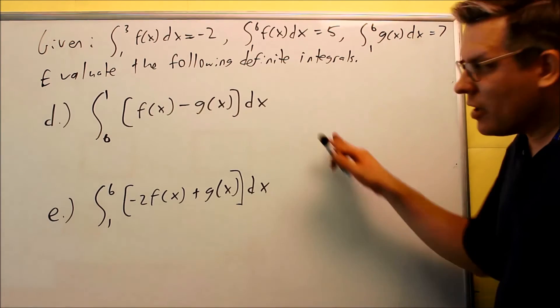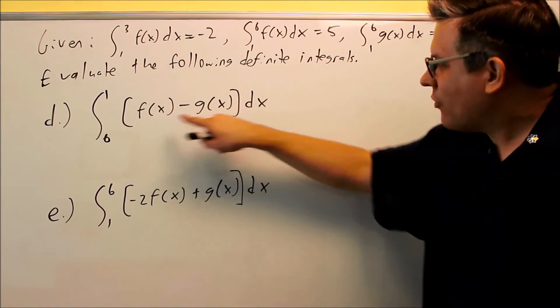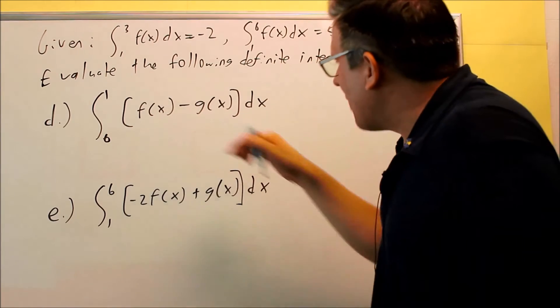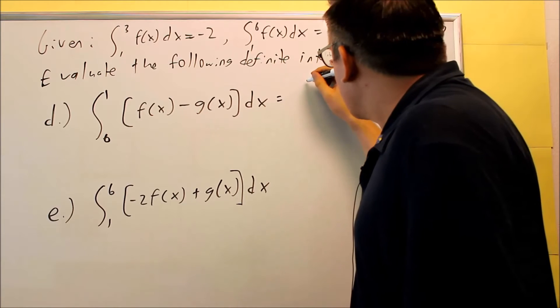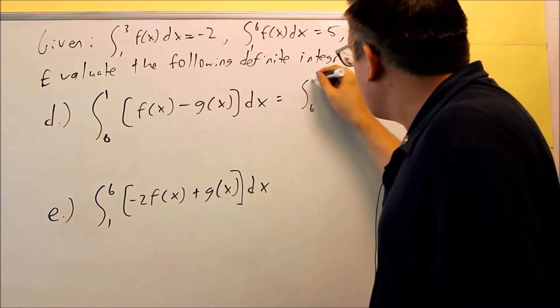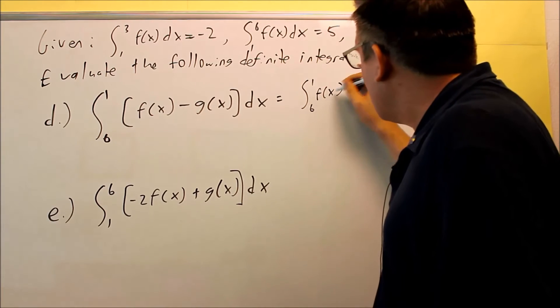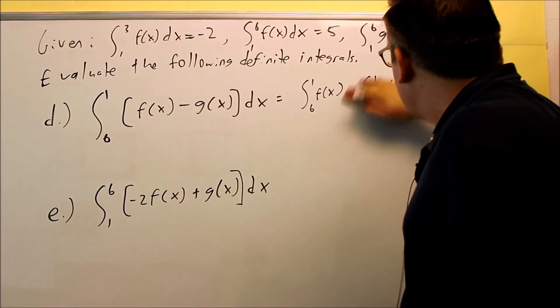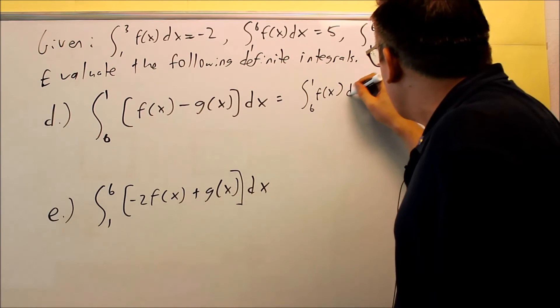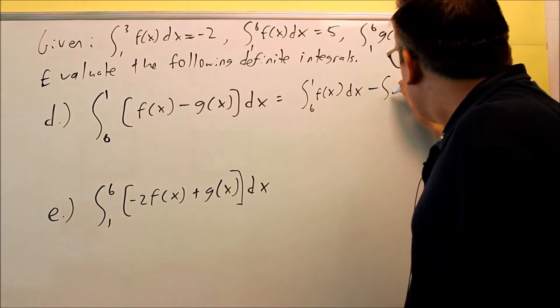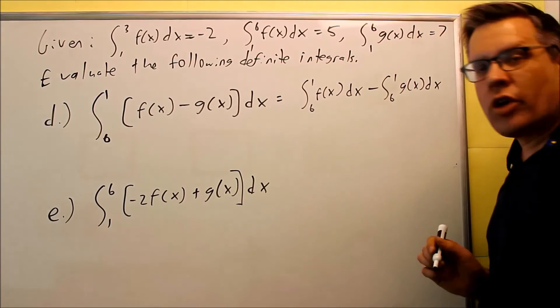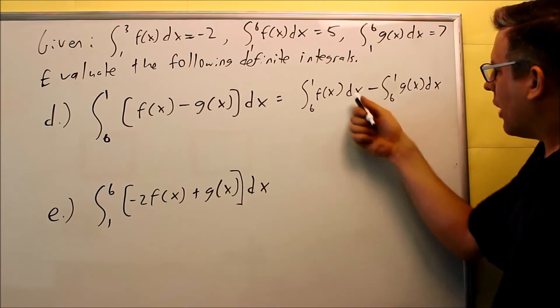Now for d and e, for part d, I have f of x minus g of x. What I want to do first is separate this and we're going to break it up. So we're going to do first, we'll do the integral from six to one of f of x minus integral six to one of g of x. And of course, don't forget to put your dx into each one of those. So now I have this written correctly. So I have dx for each one and I have a minus.